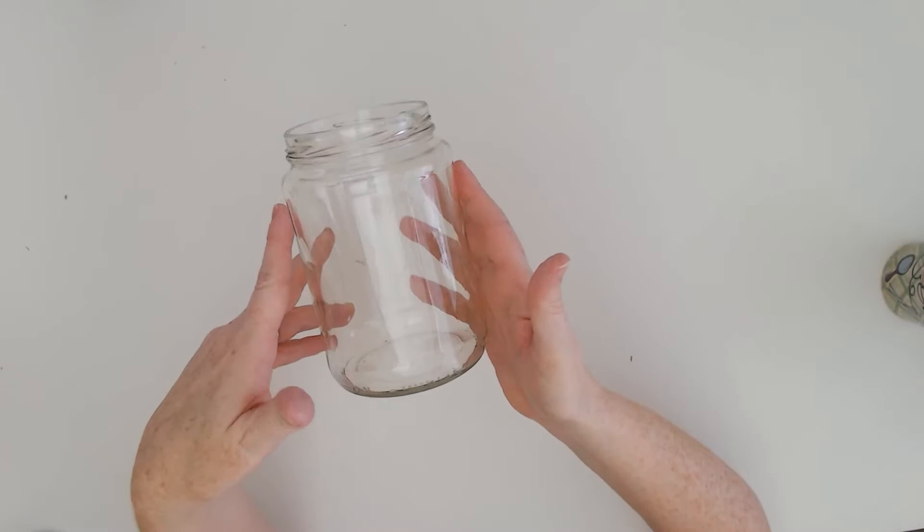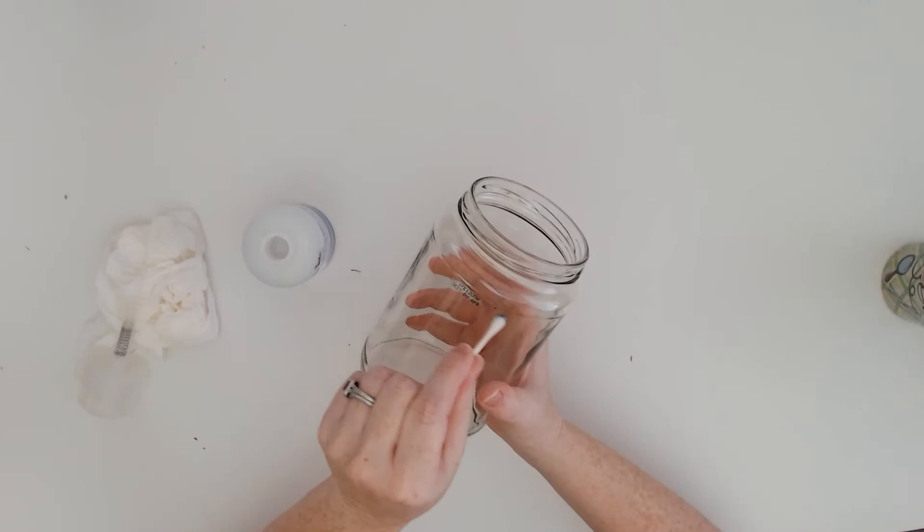If you find that the jar has stamped writing on it and that bugs you, then you can actually remove that with some acetone or nail polish remover and a Q-tip, and it just wipes right off.